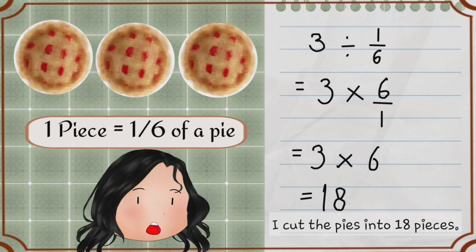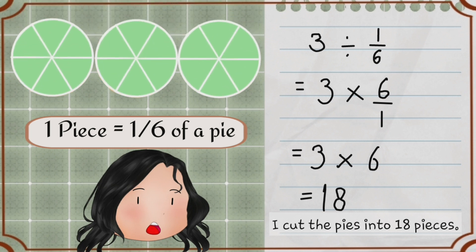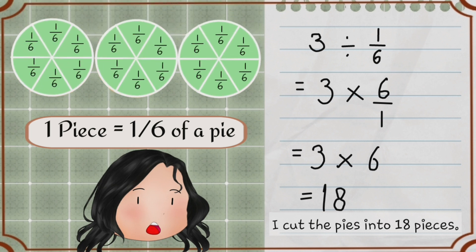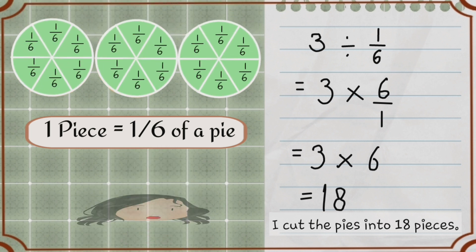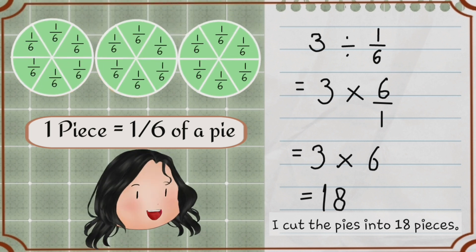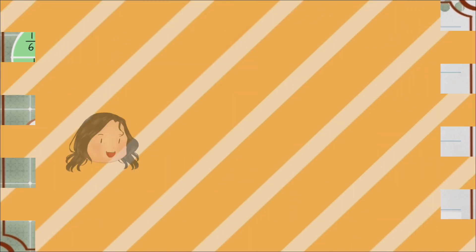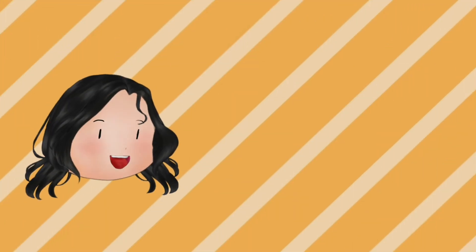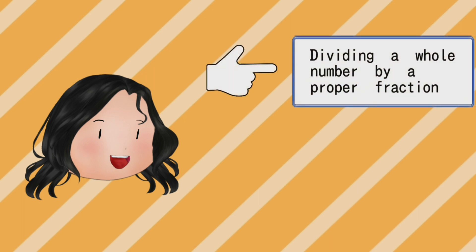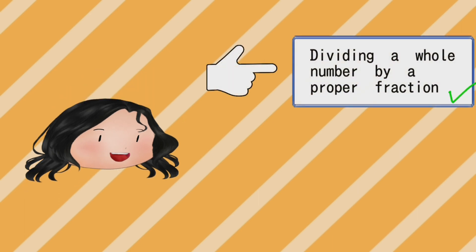Look at the model. From the model, we can prove how to get 18 pieces of pies. Those are examples of dividing a whole number by a proper fraction.